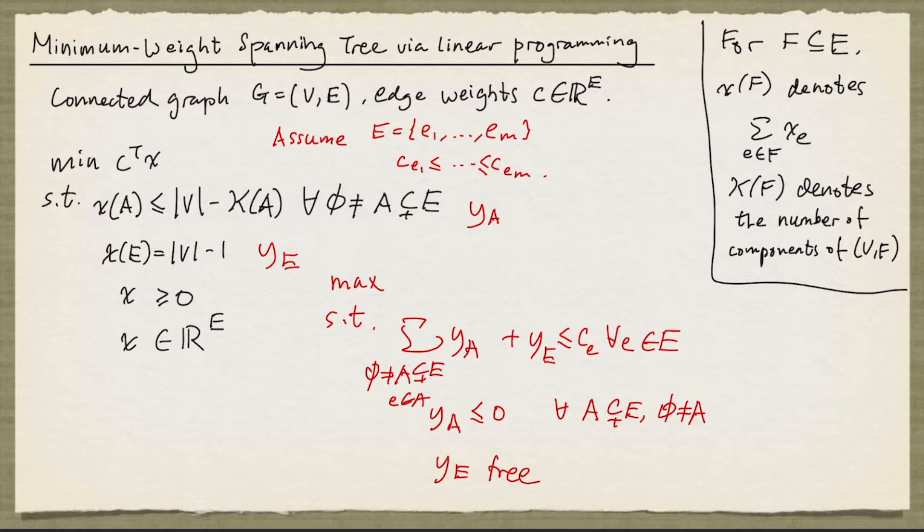The objective function will be summed over all the a's that are non-empty and proper subsets of E, of number of nodes minus kappa of a times y_a, plus the number of nodes minus 1 times y_e. But since g is a connected graph, if we look at kappa of e, there must be 1.